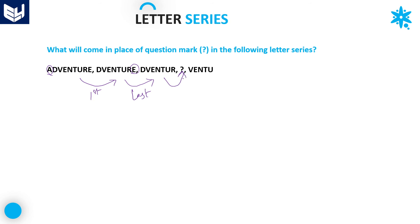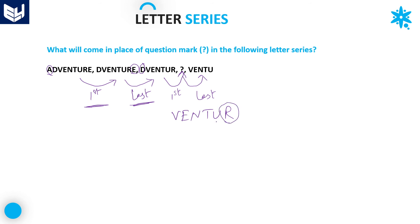The question mark is placed between the third and fifth terms. Observing carefully: initially the first letter is eliminated, then the last letter. So continuing the pattern, from the third term the first letter should be eliminated to get the fourth term. Eliminating the first letter gives V-E-N-T-U-R. Then from fourth to fifth the last letter R is eliminated, giving V-E-N-T-U, which matches the given fifth term. The logic is alternately eliminating the first letter then the last letter.